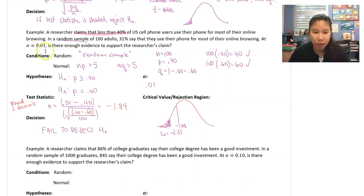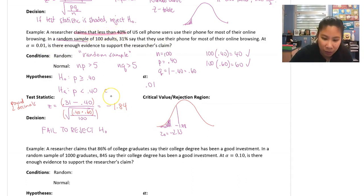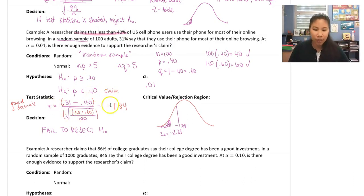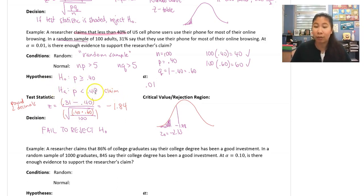Since the test statistic is not shaded, we fail to reject Ho. The researcher's claim was about less than 40%, which was Ha. Because we fail to reject Ho, we think Ho is true and Ha is false — so there is not enough evidence to support the researcher's claim.